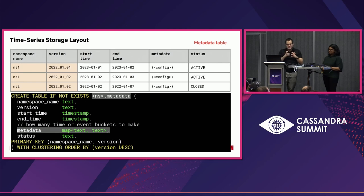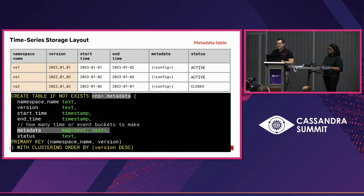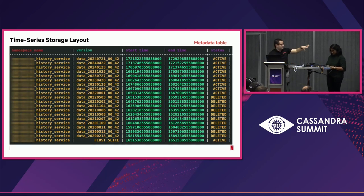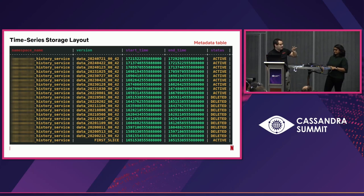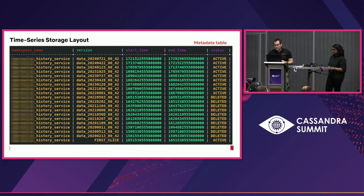The time series storage starts with a metadata table describing how we lay out each time series. It has a namespace, a start time and end time, a time interval, some metadata, and a status. This is a real production example — a blank history service. At Netflix there are many history services: viewing history, impression history, and others. These datasets are among the most valuable to Netflix because personalizing the experience requires understanding historical behavior. They're also among the most massive — this one spans multiple years of data. The status column shows whether a slice is active, deleted, or closed.